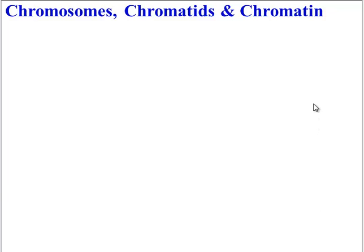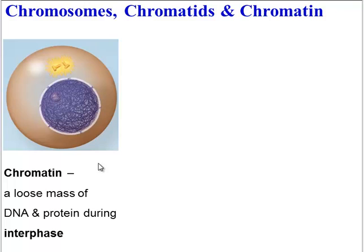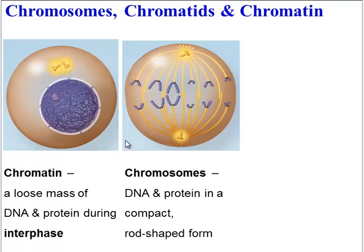To start off, it's helpful to clarify the difference between chromosomes, chromatids, and chromatin. Chromatin is how we would usually find DNA, wound around protein in a kind of a big mess in the middle of the nucleus. Anytime the cell is in interphase, this is how the DNA looks. However, during mitosis, the chromosomes will form — this is when the DNA is in a nice compact, rod-shaped body called a chromosome. You'll only see chromosomes during mitosis and cytokinesis.